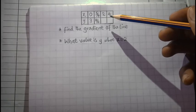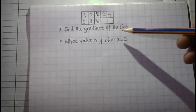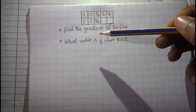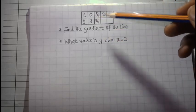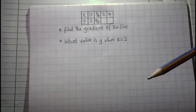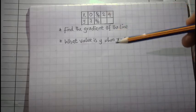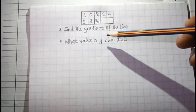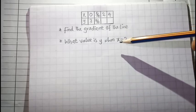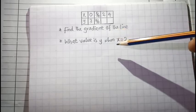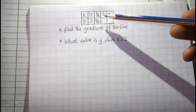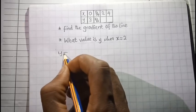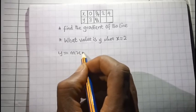Given this table of linear equations, we want to find the gradient of the line and the corresponding value of y when x is equal to 2. There are many ways to solve this type of question, but the best way is to solve it simultaneously by finding the equation used to form this particular table. From the equation, you'll be able to obtain the gradient, which is the slope, and later substitute x equal to 2 to obtain y. The general linear equation is y equals mx plus c.